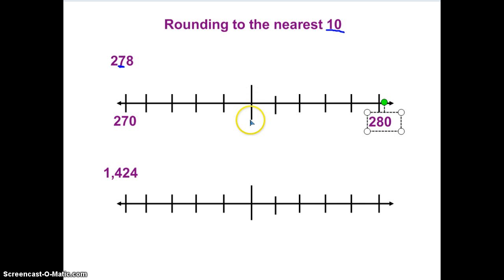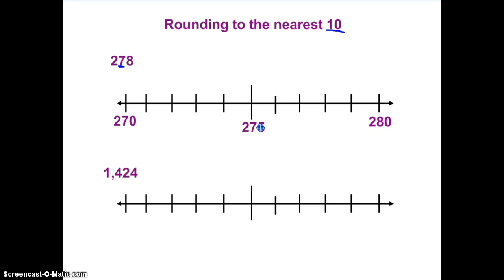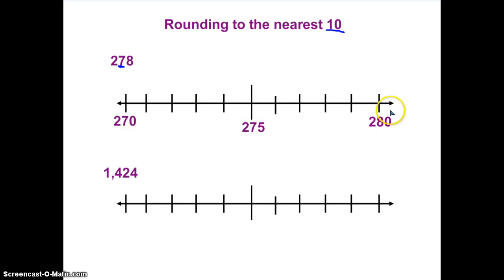This midpoint here is also important for us to label. What's in between 270 and 280? 275 — that's my midpoint, right in between 270 and 280. Let's double check to make sure that's indeed 275: 270, 271, 272, 273, 274, 275. Yes! So I have my number line set up here in order to help me round this number, 278.